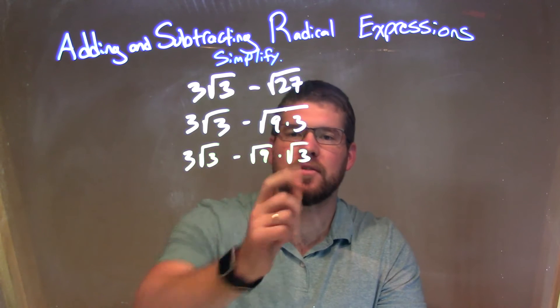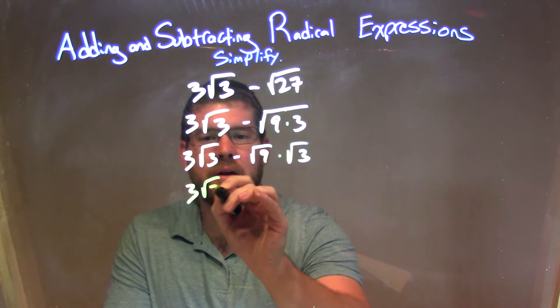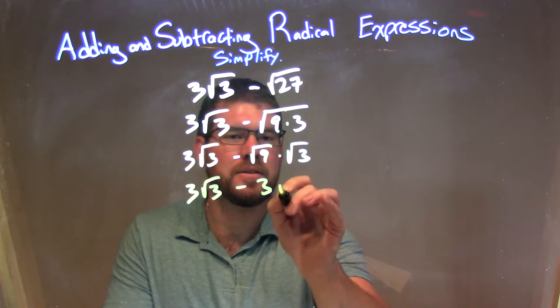Let's make sure both parts here have a square root. Square root of 9 is easy, that's just 3. So we have 3 square root of 3 minus 3 times the square root of 3.